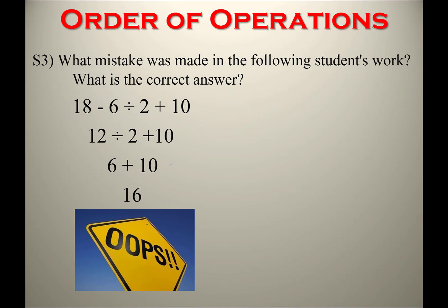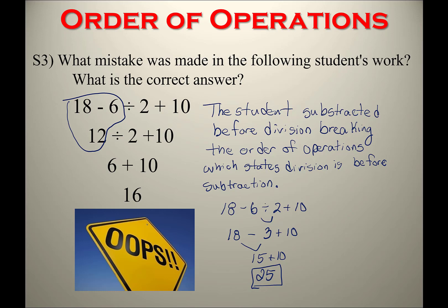This problem asks you to identify a mistake. When explaining mistakes, refer to the mathematical rule that was broken to justify your reasoning — simply saying something is wrong without justifying why is not satisfactory. The student subtracted before division, breaking the order of operations, which states division comes before subtraction. Indicating exactly which numbers were incorrectly subtracted and at which step makes the answer even better. When correctly simplified, the expression equals 25.